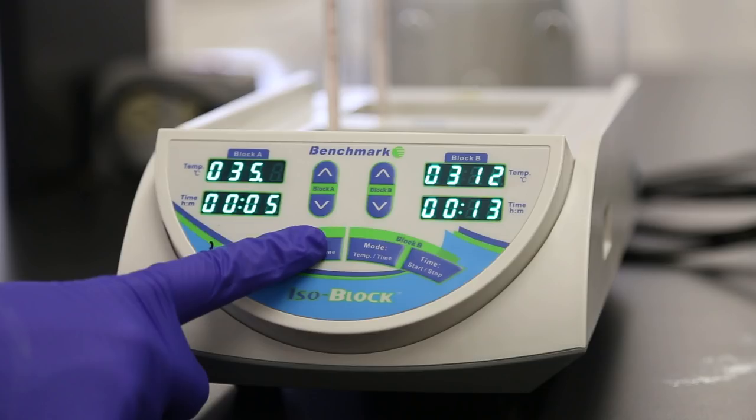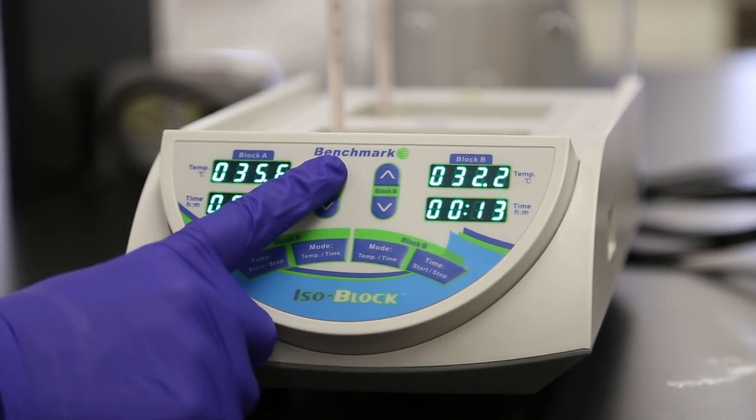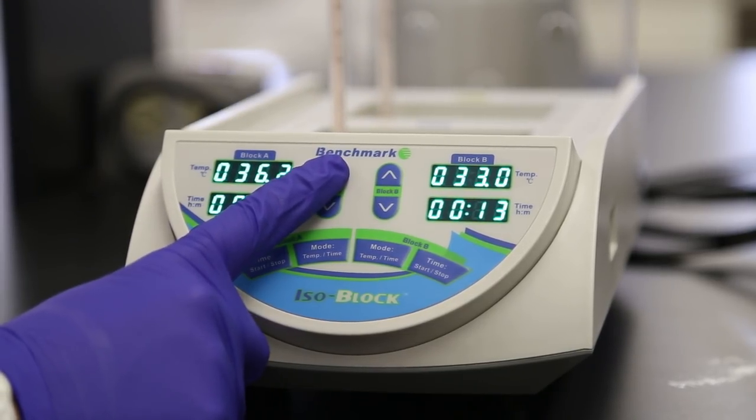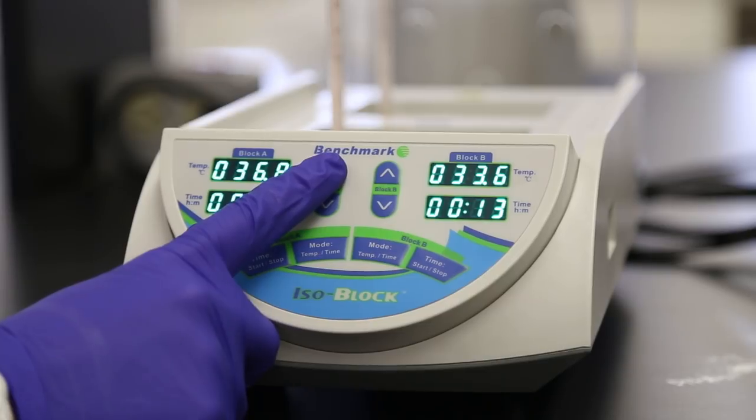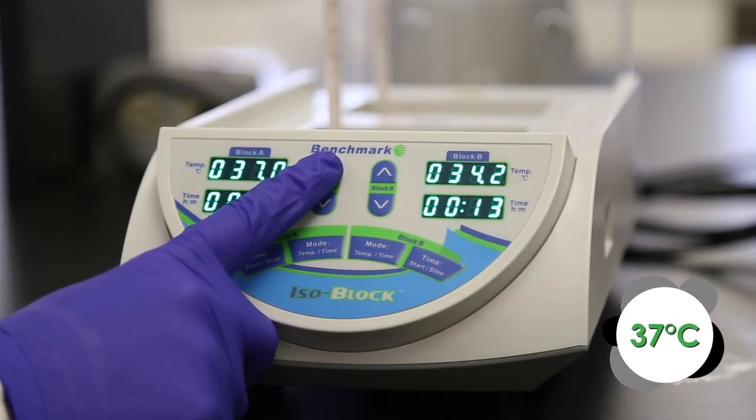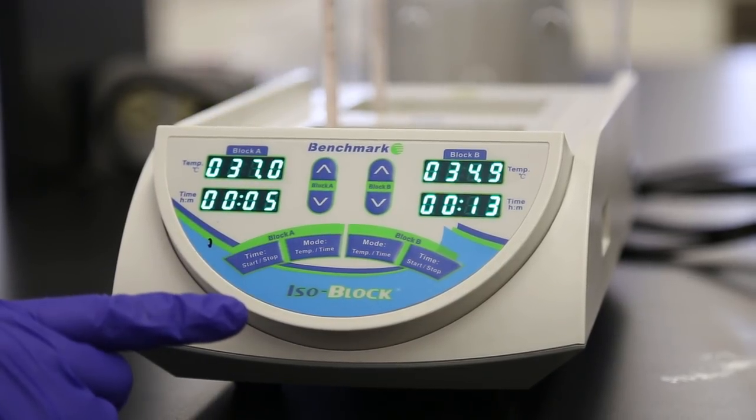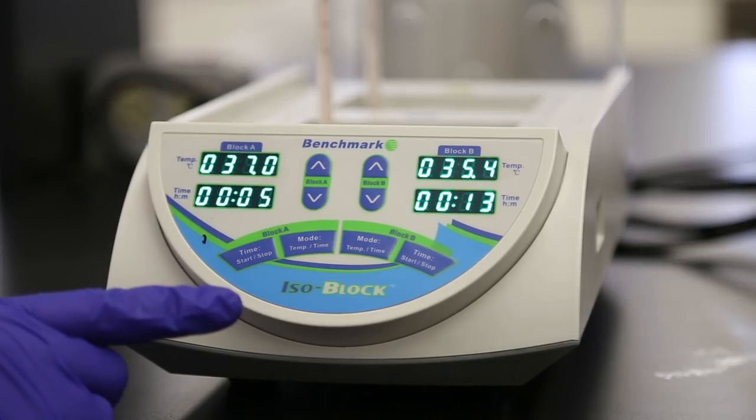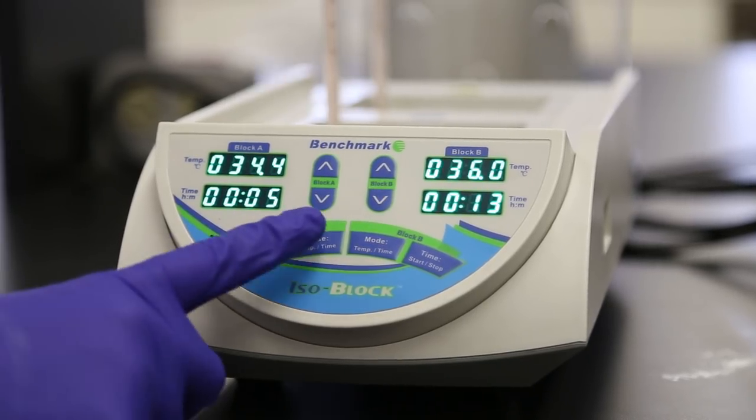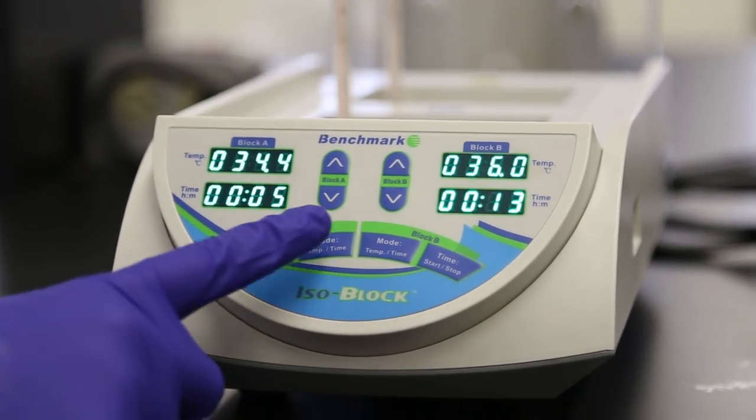The last digit of the temperatures display flashes indicating the selected field. Using the Block A arrow keys, press and hold up or down to adjust the temperature setting to 37 degrees Celsius. Holding down the button adjusts the setting temperature faster. The block immediately starts heating. To use the built-in timer, press Mode Temp Time for Block A twice to select the time setting.